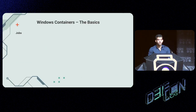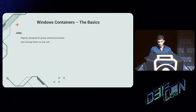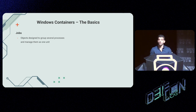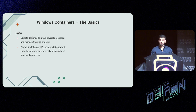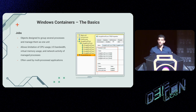Let's start with the basics of Windows Containers: job objects. Job objects have been around since the days of Windows Server 2003. These objects are designed to group several processes and manage them as one unit. This allows the system to control the attributes of all processes associated with a job, like limiting their CPU usage, IO bandwidth, virtual memory usage, and network activity. Multi-process applications often use these objects to manage child processes more easily — these are also known as nested jobs.